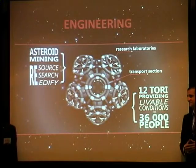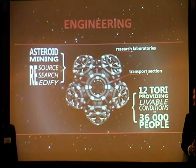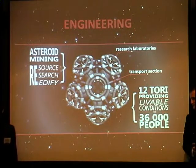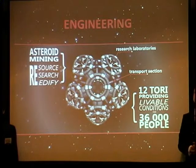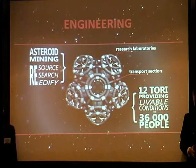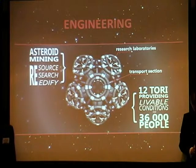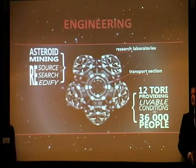Our city consists of 12 tori — 6 small and 6 major — and they provide living area for up to 36,000 inhabitants. They are connected to each other via enormous links which contain the transportation systems. The whole structure is attached to the asteroid, and the industrial area is on its surface.